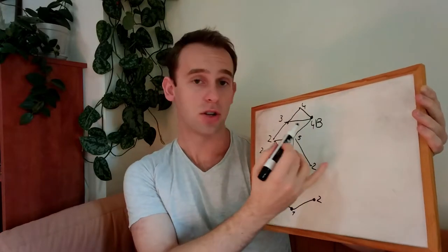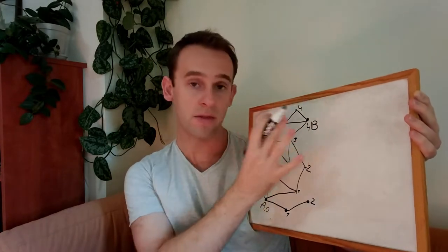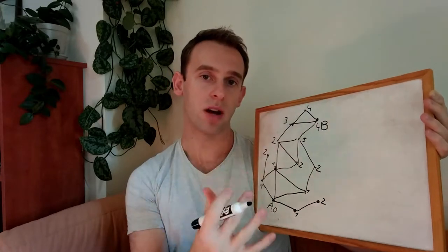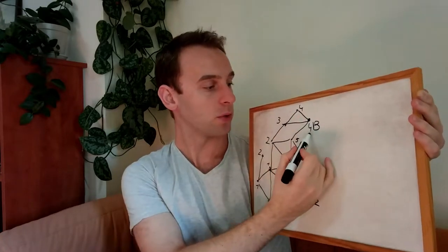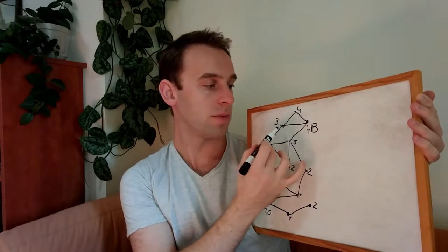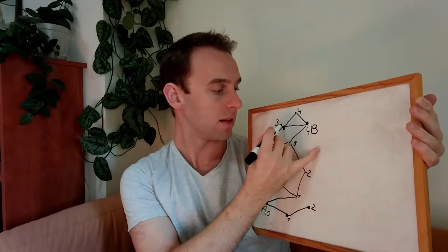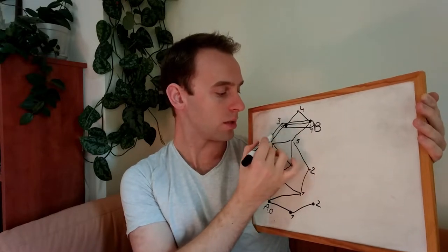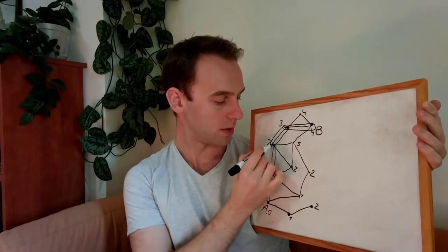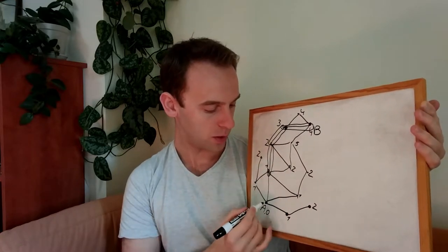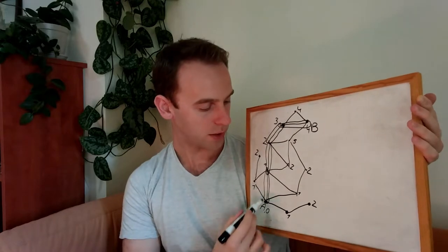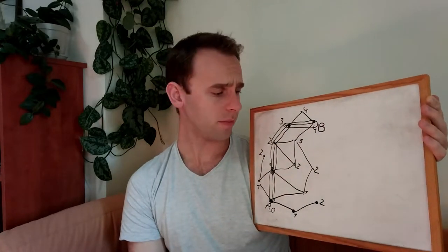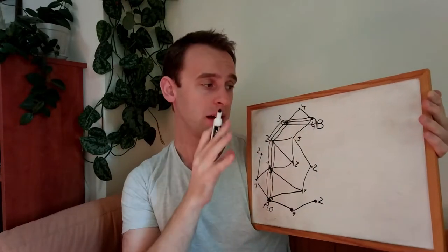Now we know that the shortest distance from A to every node is, like, for this one is three, for this one is four, and for B is four. And what we can do, we can track back the route from B to A. For example, when we put here the four, we put it based on this node. So we can say that this is the edge we need to take. And when we put this three, we use this node. When we've put this two, we've used this node. And when we've put this one, we've used this edge. So now we can see a route of four from node A to node B. This is the main idea behind this algorithm.